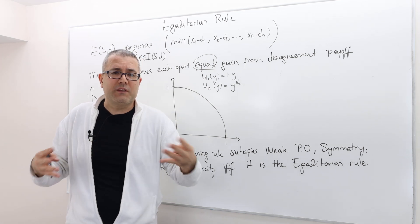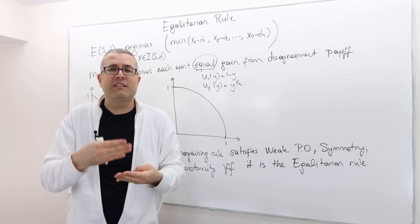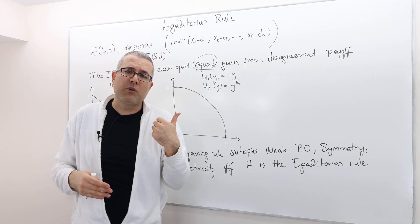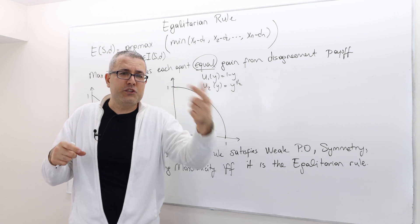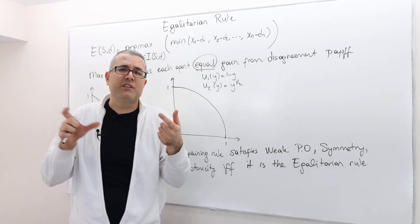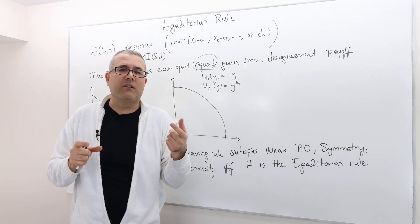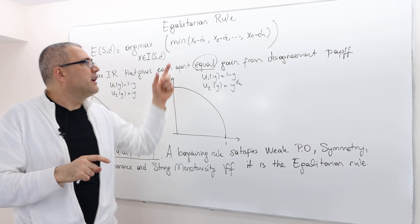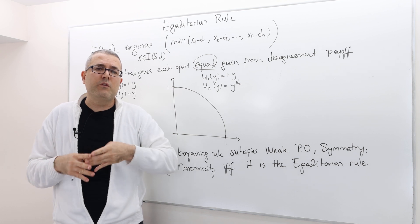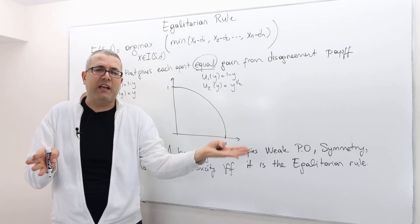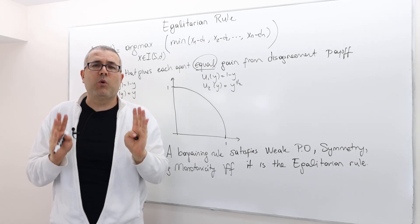Well, how should I distribute this additional surplus on top of these guys' disagreement points? Well, Kalai-Smorodinsky was distributing it in such a way that the distribution in respect to the agent's aspiration points are related. The ratio should be kept the same. Here, it doesn't care about the ratio. It says, well, if I'm going to distribute this additional surplus between these agents, I have to distribute it equally. So the equality is what matters.